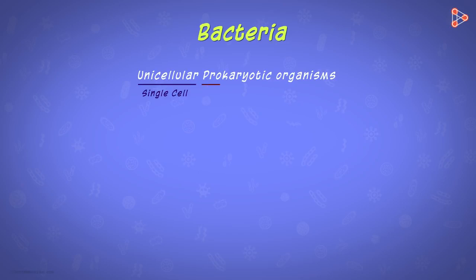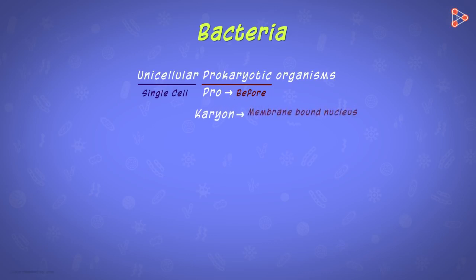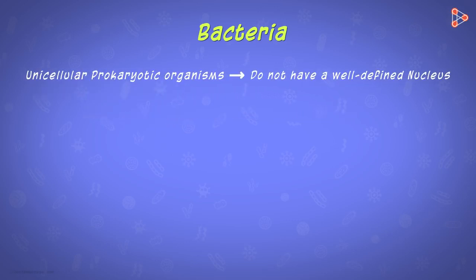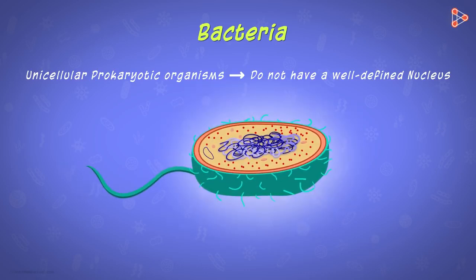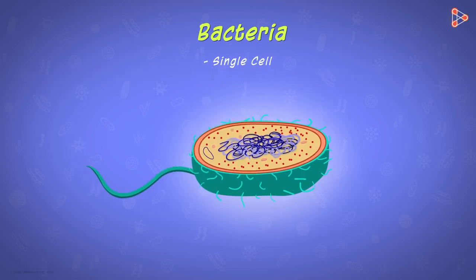And what do we mean by prokaryotic? The word arises from two Greek terms. The term 'pro' means before, referring to a primitive form, whereas the term 'karyon' means kernel or nut, and here it refers to a membrane-bound nucleus. So prokaryotic organisms are those which do not have a proper well-defined nucleus. In these organisms, the genetic material is randomly scattered in the cytoplasm. So when we say bacteria are unicellular prokaryotes, it means they have a single cell of a primitive type without a well-defined nucleus.